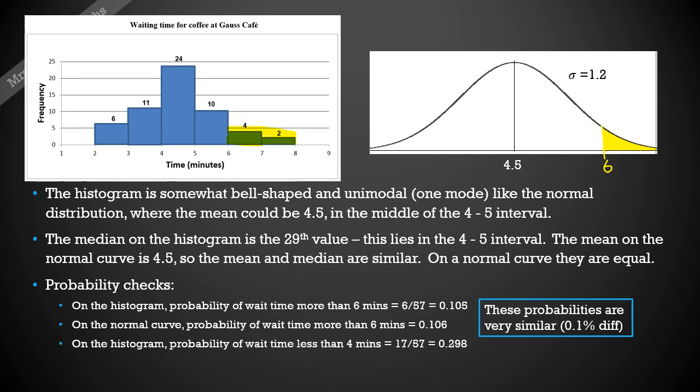Let's try another one on the other side. On our left hand tail on this histogram, the probability of the wait time being less than four minutes is 17 out of 57. That's 6 and 11 together make 17 out of 57 total, gives us a probability of 0.298. If we do the same thing on the normal curve, what's the chance of the wait time being less than four on that curve? It's going to be this tail to the left.